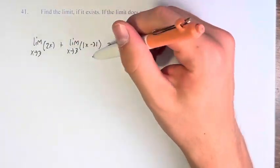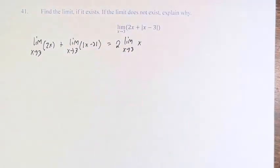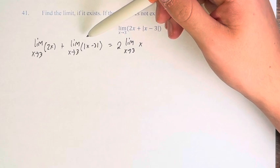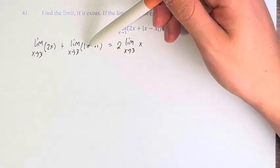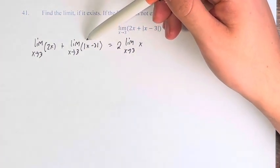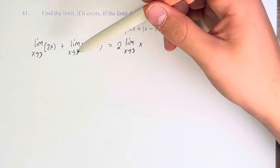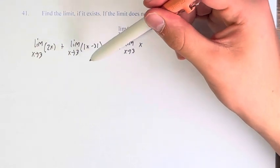And the limit of the absolute value of x minus 3 is going to be a little bit more complicated. Because it matters whether what's inside the absolute value is positive or negative, we have to consider is that applicable for here?